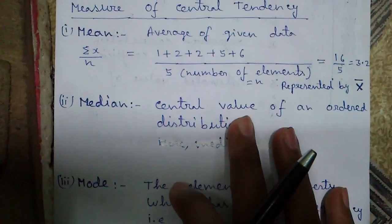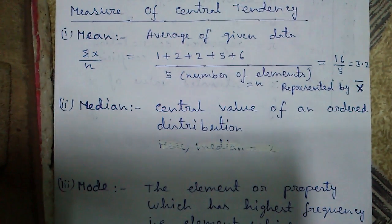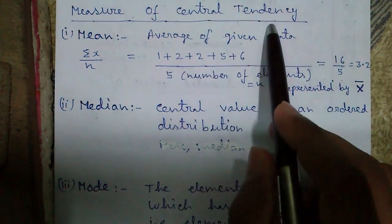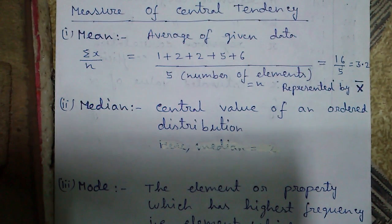In statistics, there are basically two kinds of calculations. Number one is measure of central tendency and number two is measure of variation. In measure of central tendency, there comes mean, median and mode.